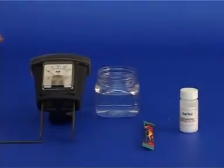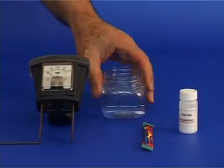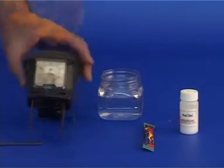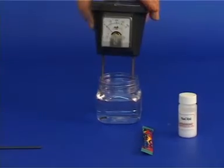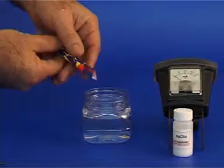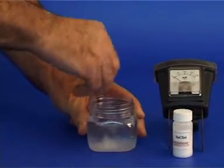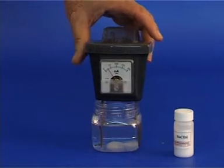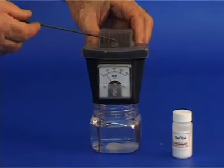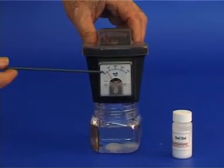We shall repeat the last experiment using the other conductivity device. Measure the conductivity of tap water. Add the sugar, stir and observe the conductivity now. The bulb does not light up and the reading is the same as with the tap water.